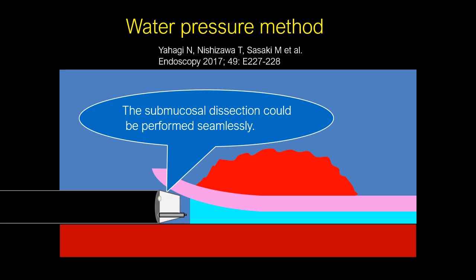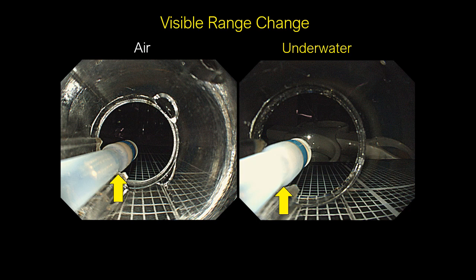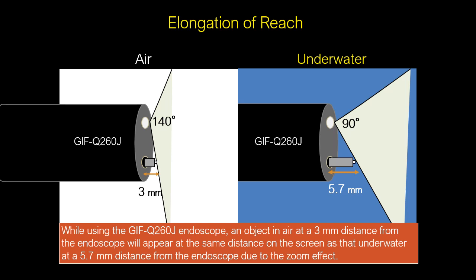The visual field loss due to splashing water disappeared when using water pressure in underwater conditions, and submucosal dissection could be performed seamlessly. Basically, once air is replaced by water, the focal length increases and the object may appear closer. In underwater conditions, operators can handle the knife for a longer distance than in-air. Using the ZRFQ-260J endoscope, an object in-air at a 3mm distance from the endoscope will appear at the same distance on screen as that underwater at a 5.7mm distance, due to the zoom effect. We coined this effect as 'elongation of reach.'